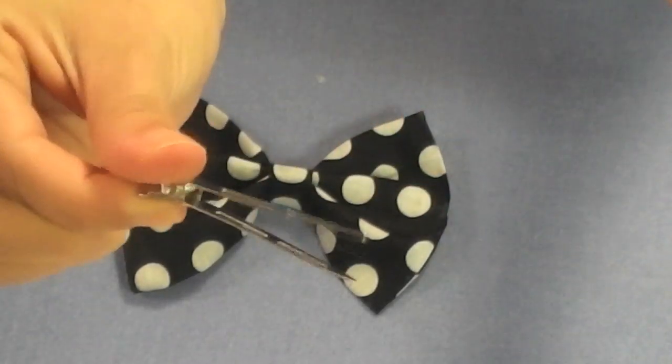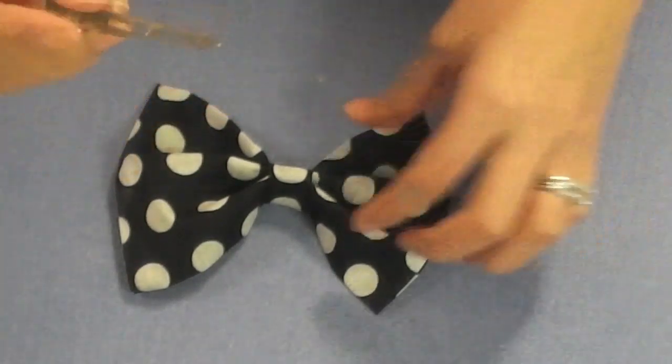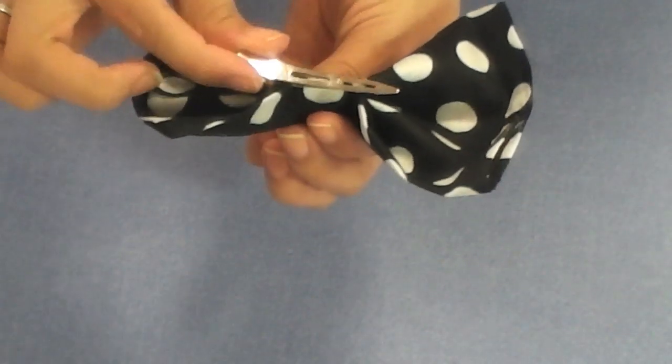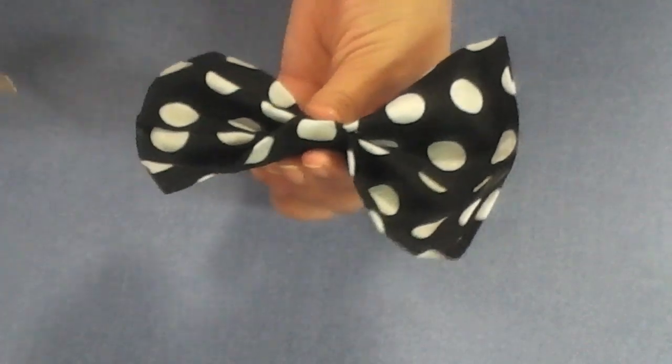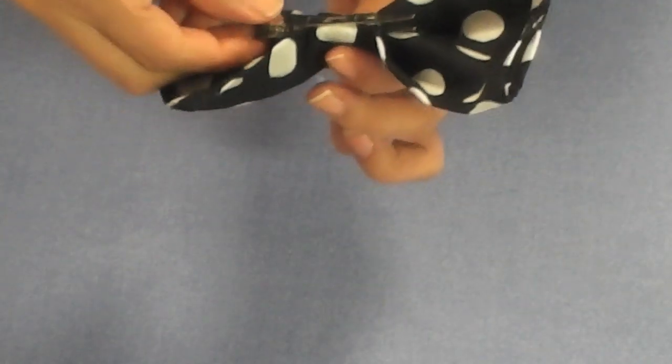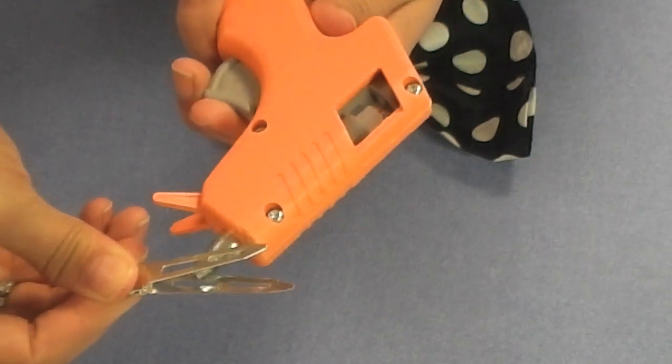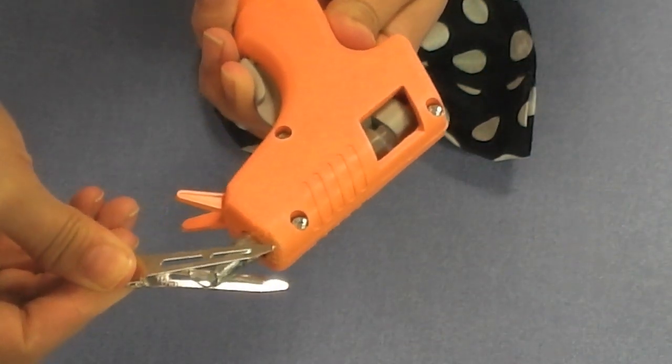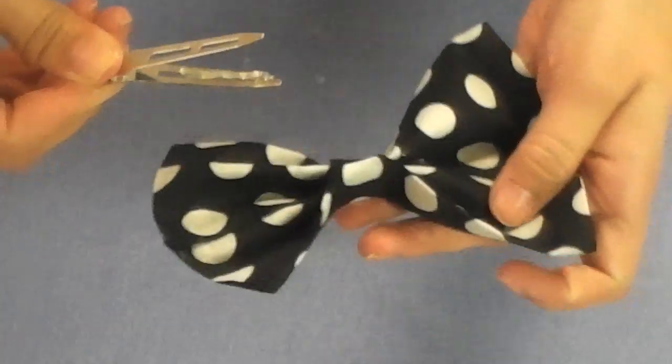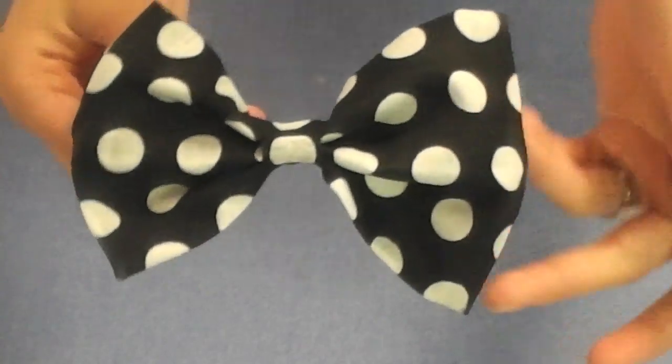And then you want to take your clip and then just find where you want to put it at on the back of your bow. And then you want to just put the glue on your clip and then put it on your bow. And that's it.